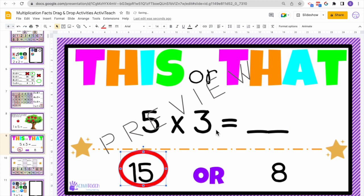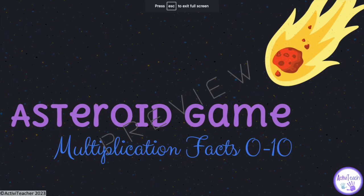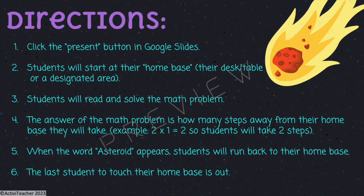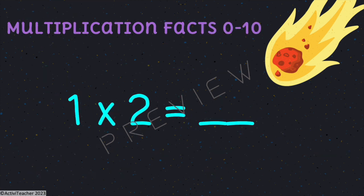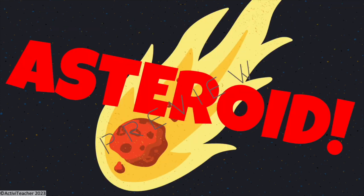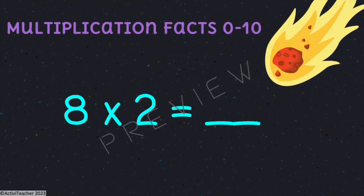The next game is called Asteroid. Students start at their home base — their desk, a table, or a designated area — and read and solve the math problem. The answer is how many steps away from their home base they take. For example, two times one equals two, so students take two steps away. When the word 'asteroid' appears, students run back to their home base. The last student to touch their home base is out.